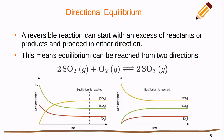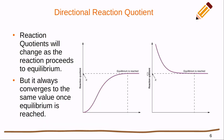Equilibrium can be approached from either direction in a reversible reaction. We can start with all reactants, consume them to produce products, and eventually reach equilibrium. Or we can start with all products and no reactants and move in the reverse direction until equilibrium is reached. Looking at the reaction quotient: if we start with all reactants and zero products, Q starts at zero, then increases toward equilibrium.